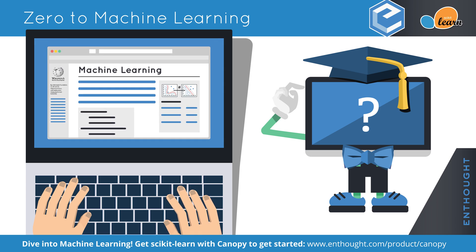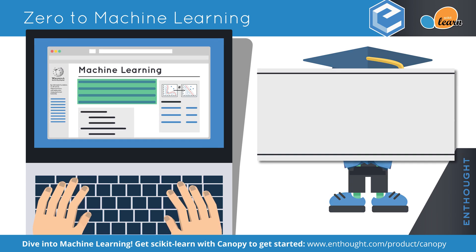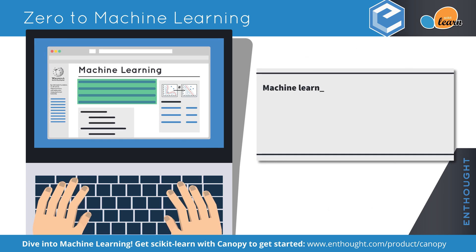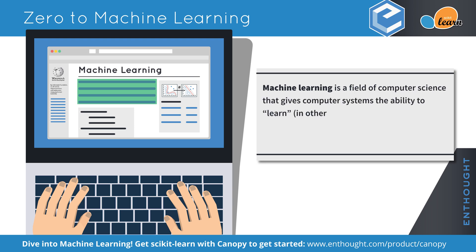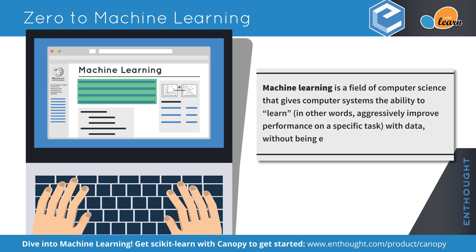Here's a definition taken from Wikipedia. Machine learning is a field of computer science that gives computer systems the ability to learn — in other words, progressively improve performance on a specific task — with data, without being explicitly programmed.